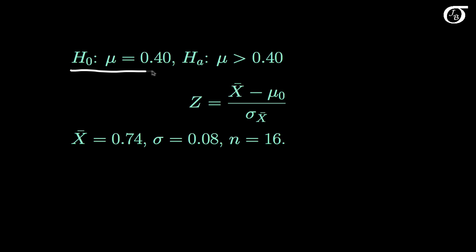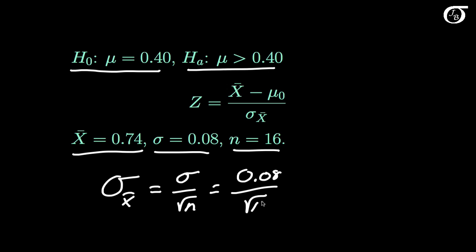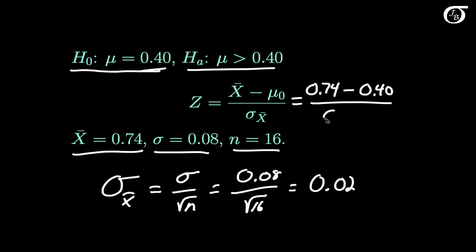We test the null hypothesis that mu equals 0.40 against the alternative that it is greater than 0.40. The test statistic is z equals x-bar minus mu-naught over sigma-x-bar. The sample mean is 0.74, sigma is 0.08, and we have 16 observations. Sigma-x-bar equals sigma over the square root of n, which is 0.08 over the square root of 16, giving 0.02. So the test statistic is (0.74 minus 0.40) divided by 0.02, which works out to 17.